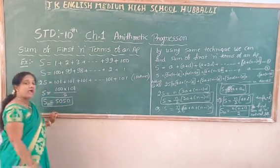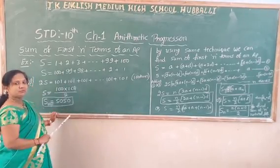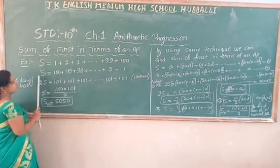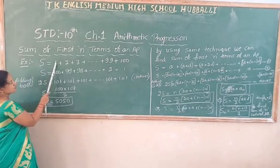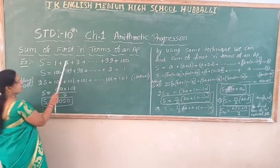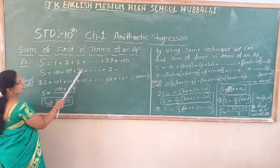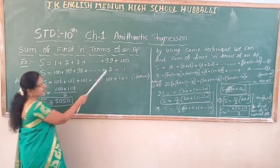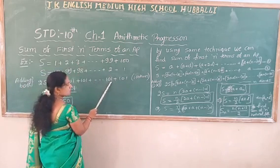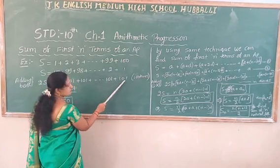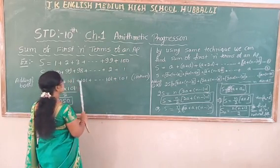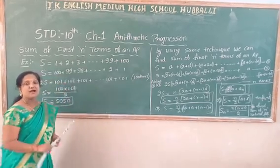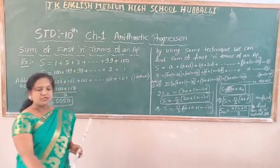Then add both sides. If I add: 100 plus 1 is 101, 99 plus 2 is 101, 98 plus 3 is 101. In the same way all pairs equal 101. How many times does 101 appear? It comes 100 times.